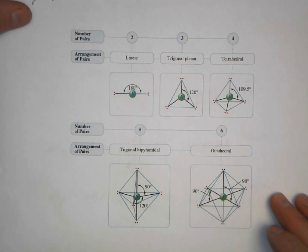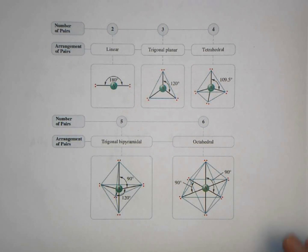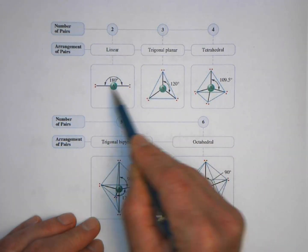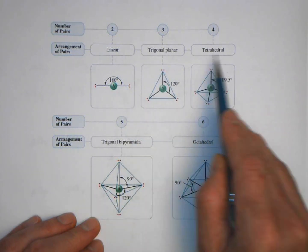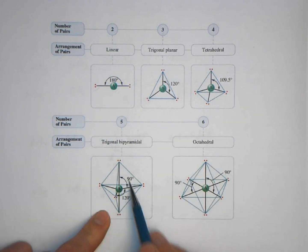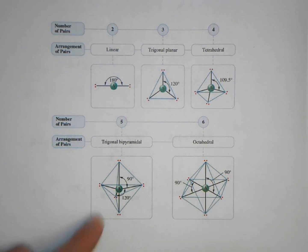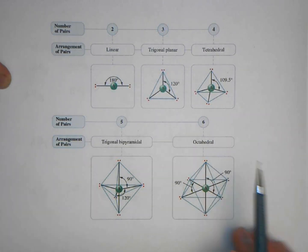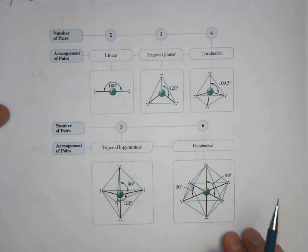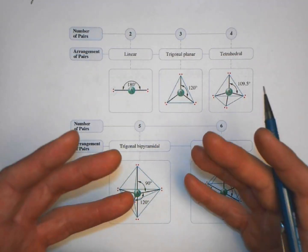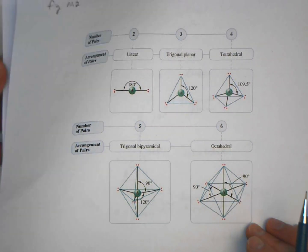It's difficult to fully show these models with this document camera setup, but the textbook figure shows them more clearly — it's Figure 10.2. To summarize: linear, trigonal planar, tetrahedral, trigonal bipyramidal, and octahedral are the five geometries for molecules without lone pairs. I again urge you to use marshmallows and toothpicks or gumdrops and toothpicks to build these shapes — it really helps with 3D visualization.